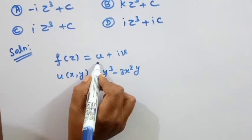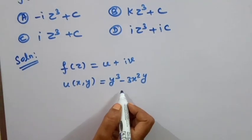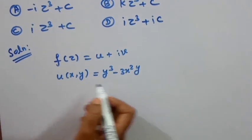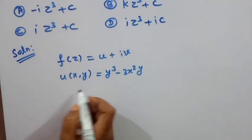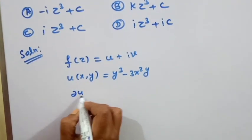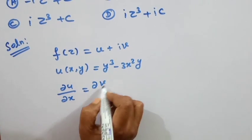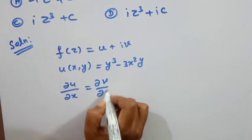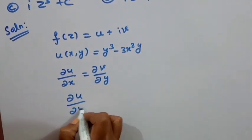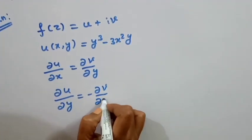We use the Cauchy-Riemann equations. We need dou u by dou x and dou v by dou y. Also, dou u by dou y is equal to minus dou v by dou x.